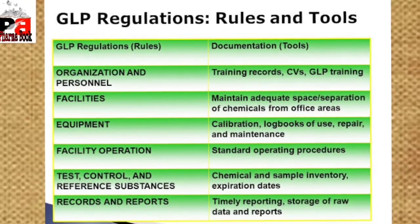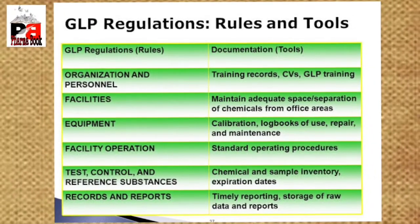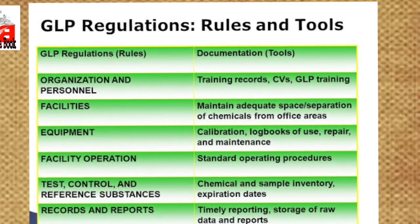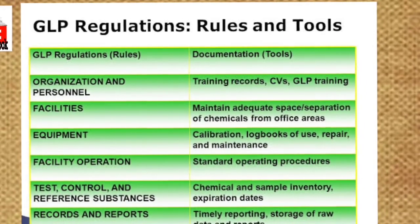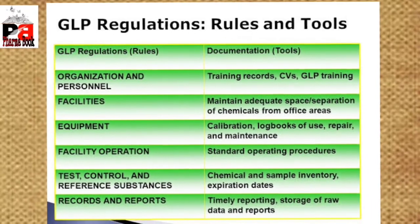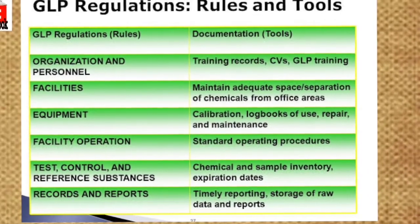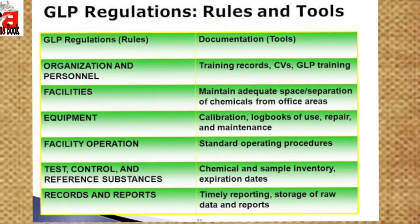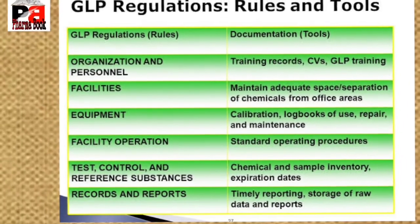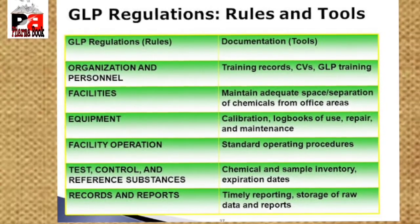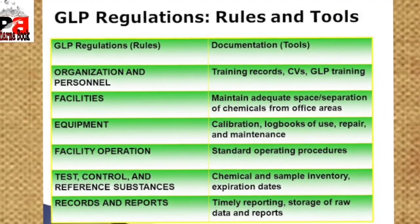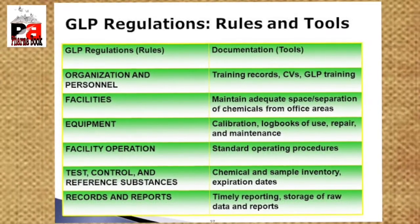Now for the main topic: GLP regulations or GLP principals. There are six principals. Number one is Organization and Personnel — everyone involved in laboratory activities must be trained, qualified, and knowledgeable about GLP rules. Number two is Facilities.